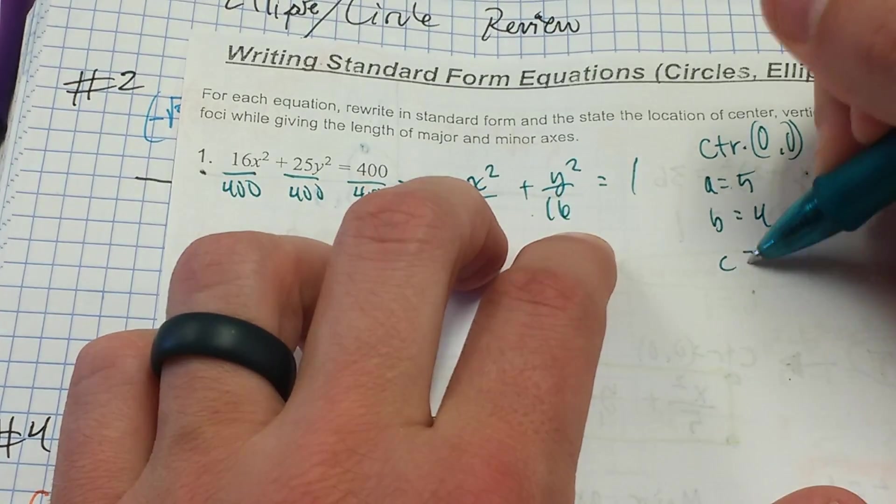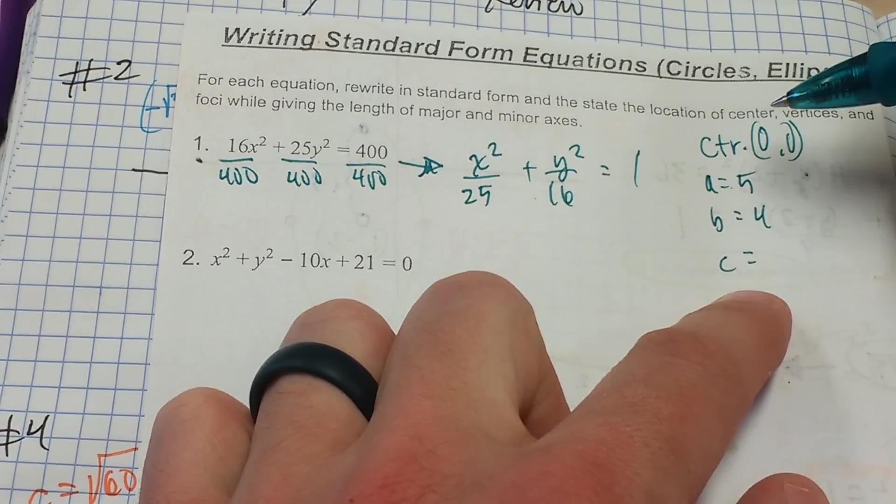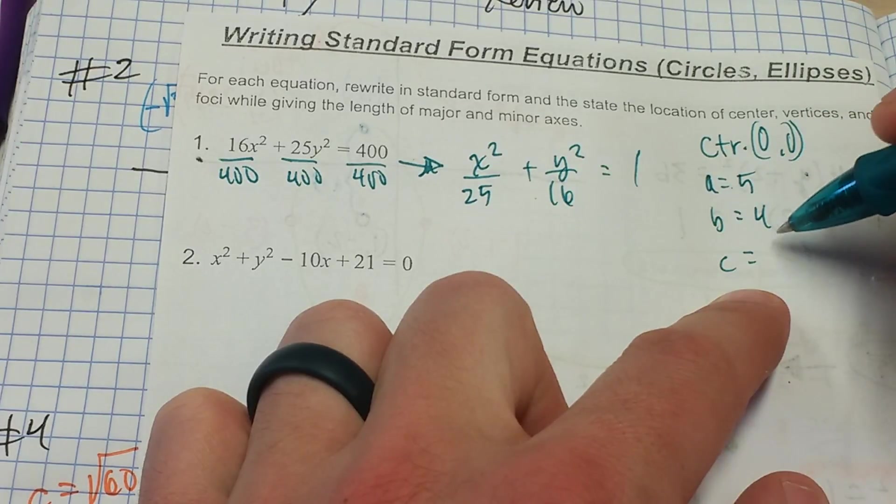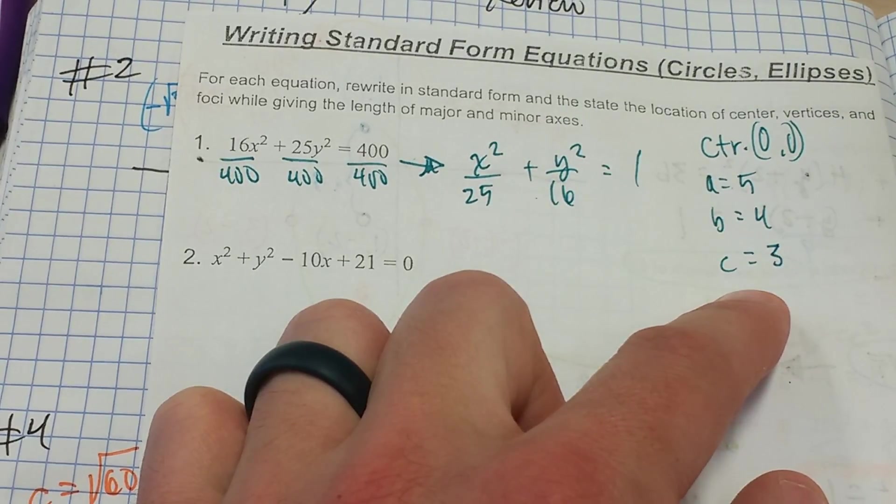And the c value, where the foci are, that's going to be the difference in the squares. a squared minus b squared is c squared. So that will have to be 3 if you work that out. And we'll show that in the graph later on.